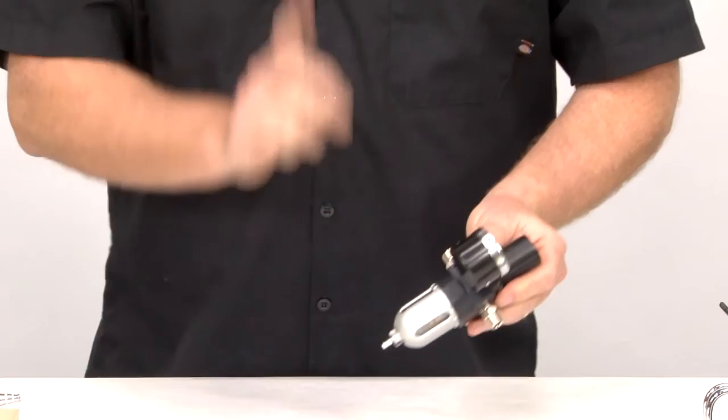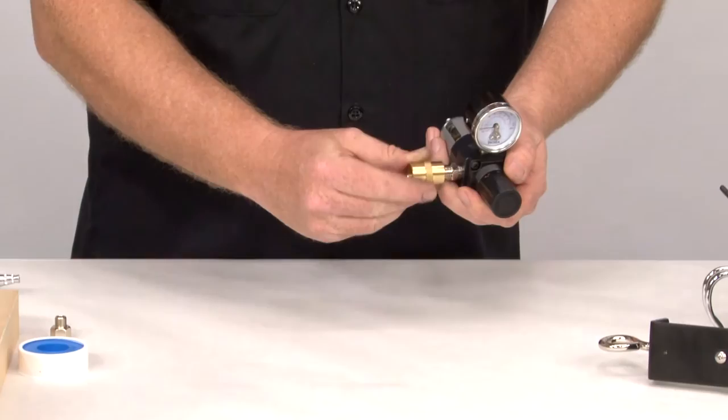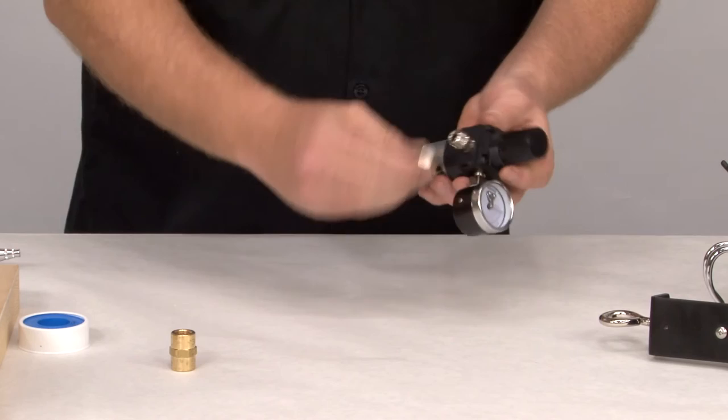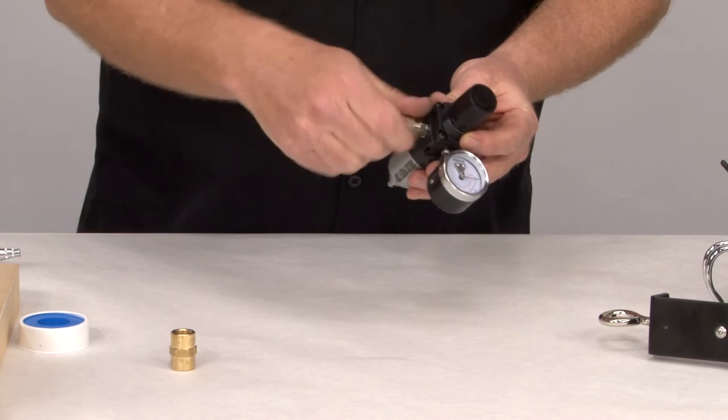It comes with a couple other goodies. You've got this little bung fitting, which allows you to go from your compressor right to the regulator. You've also got this adapter here, which allows you to step down from the quarter-inch to an airbrush hose fitting.